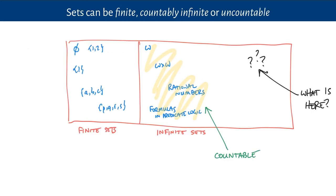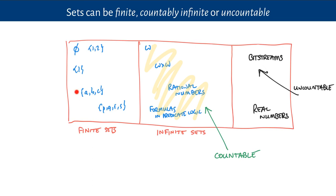What we've shown is that the collection of sets is now divided into at least three different zones. We've got the finite sets, and among the infinite sets, they can be divided into the countable ones and the uncountable ones. We've seen that the set of all bit streams is uncountable, and we'll see in class that the set of all real numbers is also uncountable — and there are lots of other sorts of collections which exceed the grasp of being enumerated.